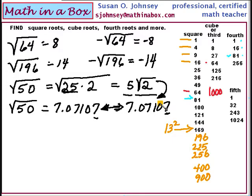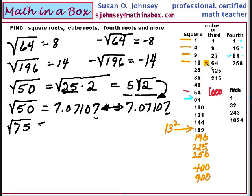Let's look at the square root of 75. Again, if you look at the list, you want to find the largest number that divides evenly into 75. It's 25. 25 times 3 — that's 5 times the square root of 3.